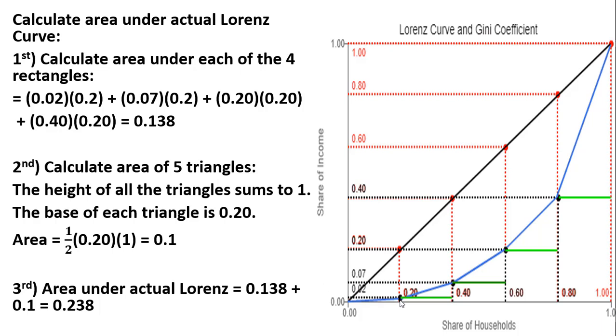Looking at this first rectangle, it has a length of 0.2. We're breaking this up into quintiles: 0.2, 0.4, 0.6, 0.8, as you can see right here these numbers. And the width of this rectangle might be a little bit hard to see, but where this black dot is, if we bring it across, that's what this 0.02 is representing right here. So this is at 0.02. That's the area of the first rectangle.